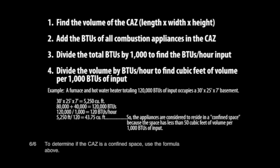To determine if the CAZ is a confined space, use the formula above. Step 1: Find the volume of the CAZ by multiplying length times width times height. Step 2: Add the BTUs of all combustion appliances in the CAZ. Step 3: Divide the total BTUs by 1,000 to find the BTUs per hour input. Step 4: Divide the volume by BTUs per hour to find the cubic feet of volume per 1,000 BTUs of input.